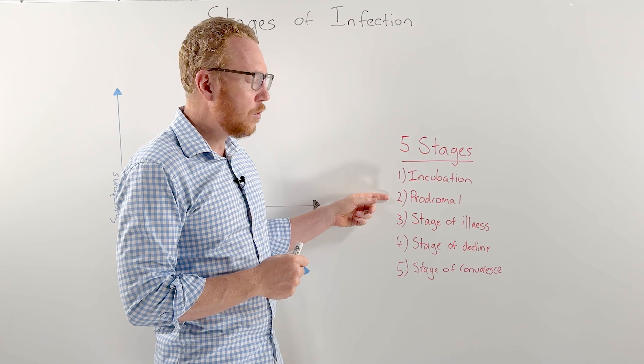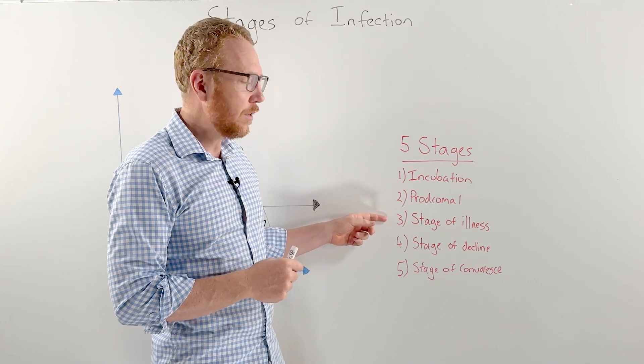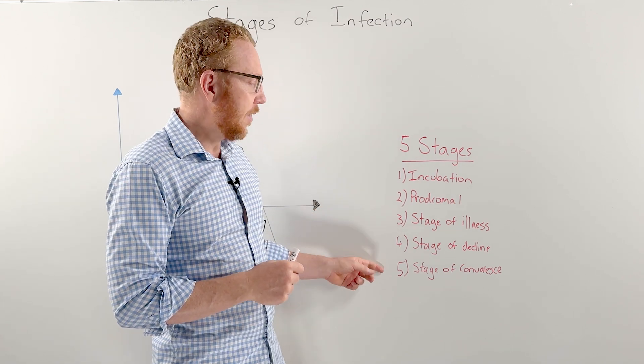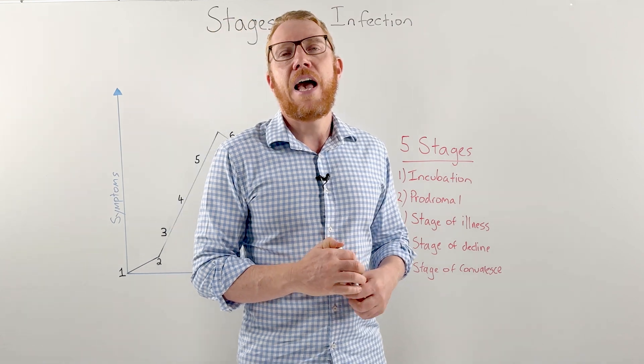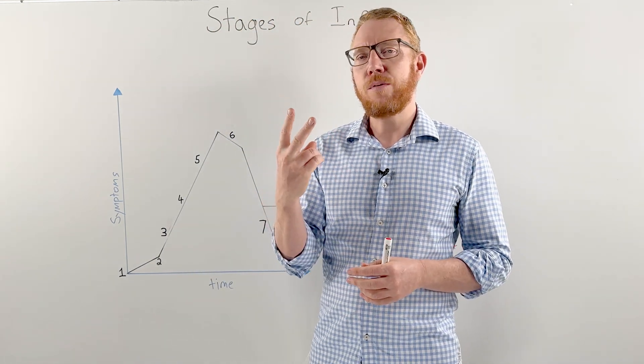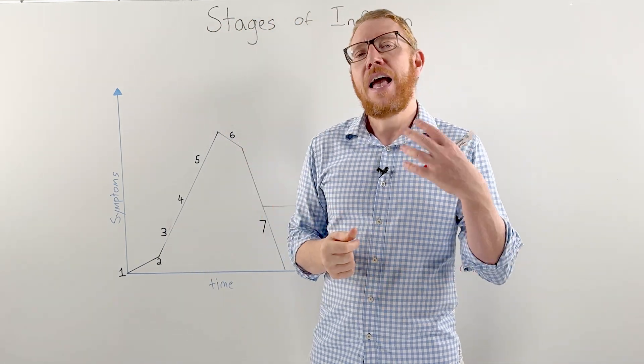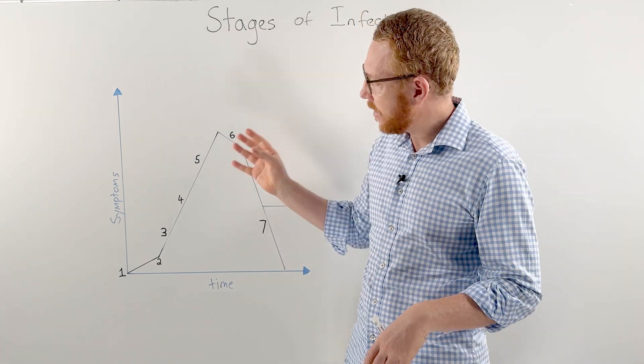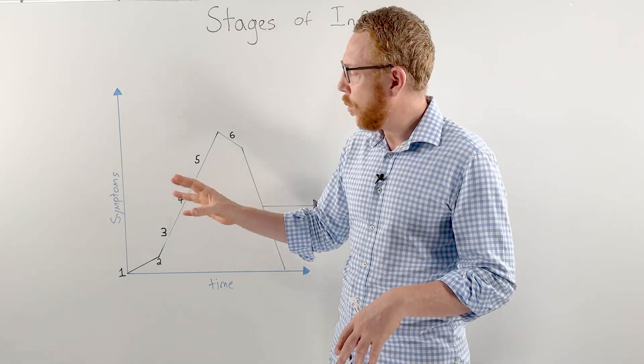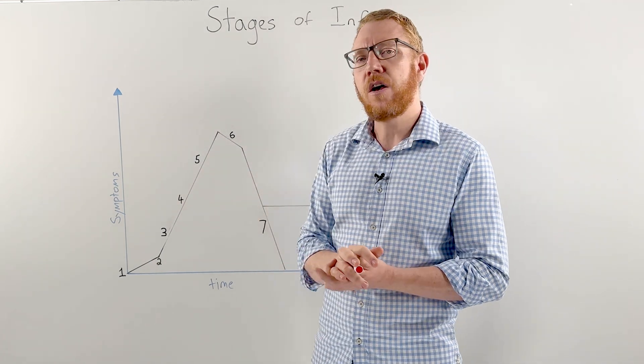But we're going to focus on five main stages: the incubation phase, the prodromal phase, the stage of illness, the stage of decline, and the stage of convalescence. I'm going to give you two examples: influenza and gastroenteritis, and explain how they are similar but a little bit different in the way that the stages of infection occur.